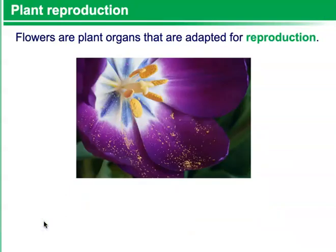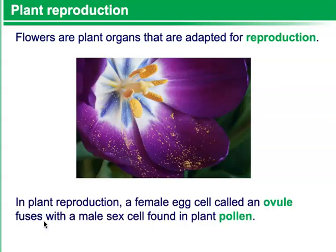Plant reproduction. Flowers are plant organs that are adapted for reproduction. In plant reproduction, a female egg cell called an ovule fuses with a male sex cell found in a plant called pollen.